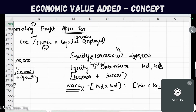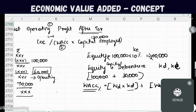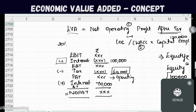Multiplying the WACC by the invested capital employed gives you the Return on Investment — this is the second part of EVA. In the first part, we have NOPAT: from Profit After Tax, we add back interest after tax to get Net Operating Profit After Tax. Then we subtract the Return on Investment — capital employed multiplied by WACC — and the result is Economic Value Added.